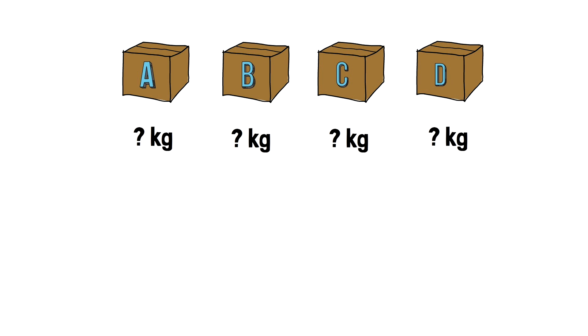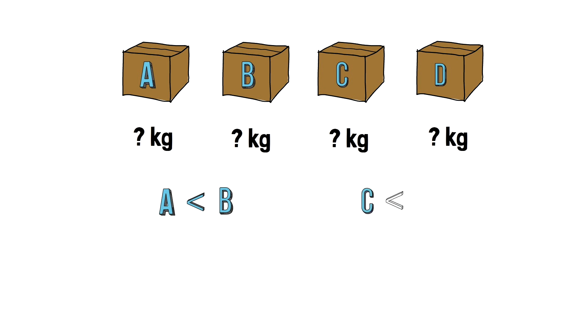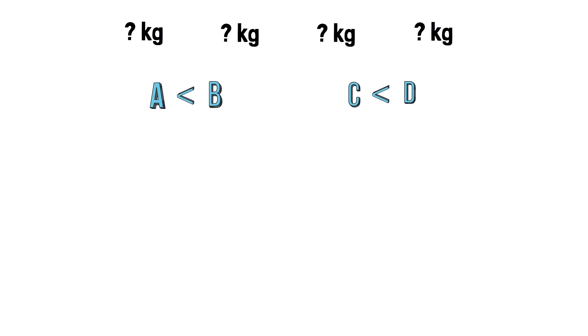But what do we know about these boxes? First, we know that box A weighs less than box B. Second, we know that box C weighs less than box D.